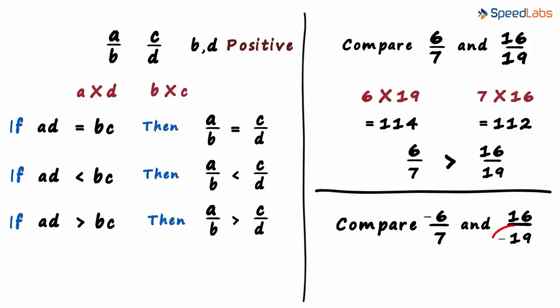Here, the denominator of the second rational number is negative. Does that mean we cannot compare these two rational numbers using this technique? Of course we can! We just write the second rational number differently. It's the same as asking us to compare minus 6 by 7 and minus 16 by 19. These two rational numbers have the same value. So keep in mind if the denominators are positive, we can use this technique to compare the two rational numbers.